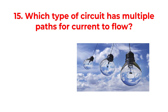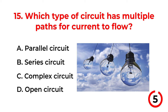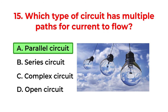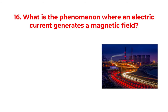Which type of circuit has multiple paths for current to flow? A. Parallel circuit. B. Series circuit. C. Complex circuit. D. Open circuit. The correct answer is option A: Parallel circuit.